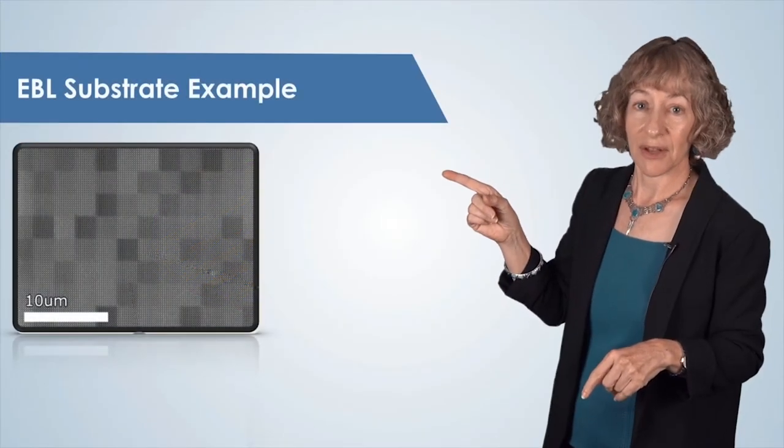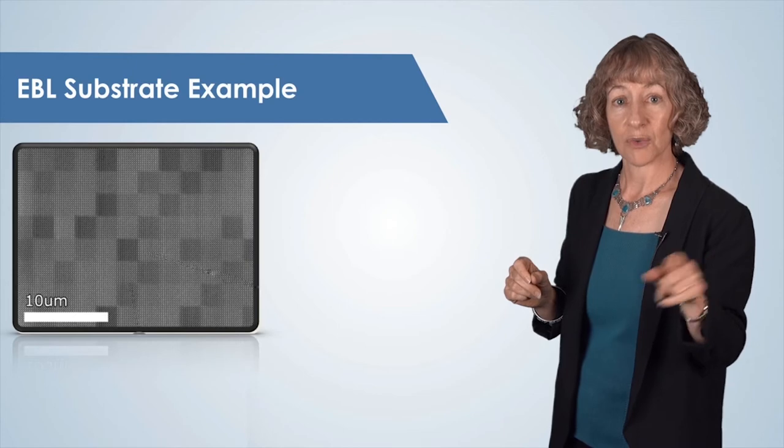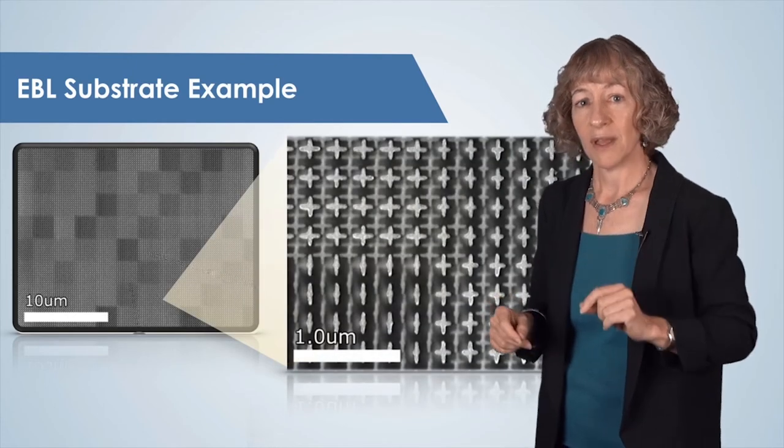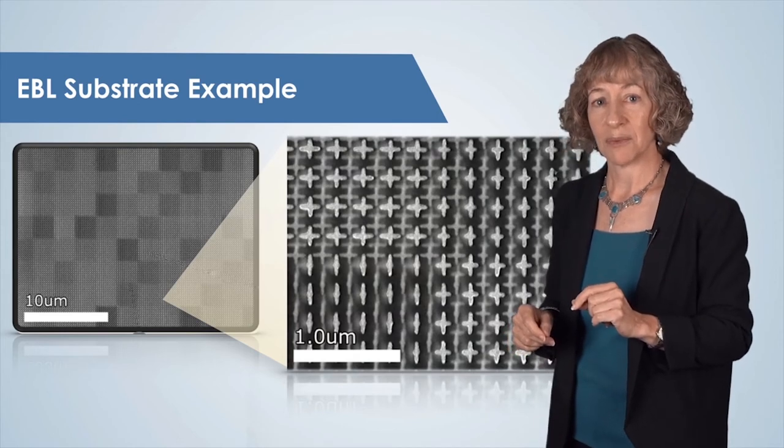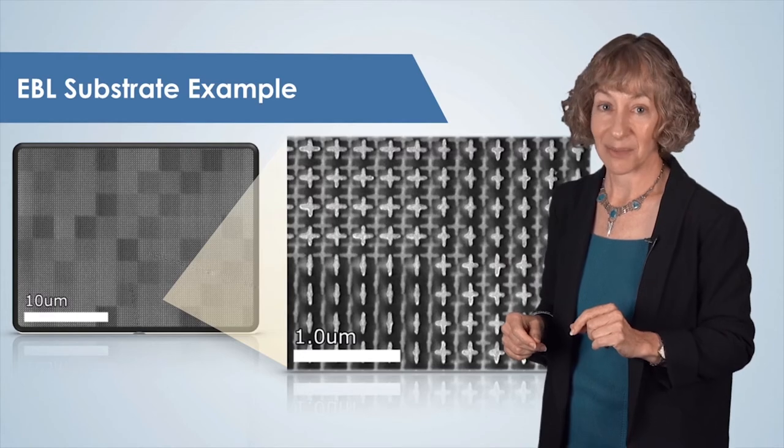Here's an example of an EBL substrate that was patterned and then underwent subsequent metal evaporation and lift-off. You can see just how small the features patterned in EBL can be. Here, we have metal lines that are only 35 nanometers wide.